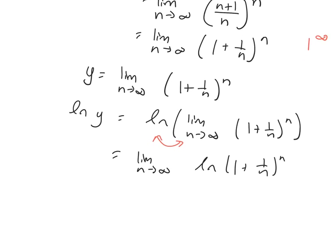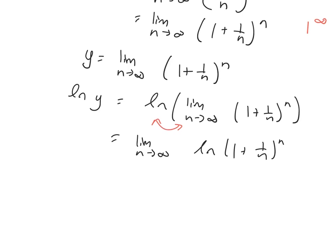And now, because I have an ln there, I can use properties of natural logs and bring the exponent down. So I'm going to bring the exponent down. n ln 1 plus 1 over n.